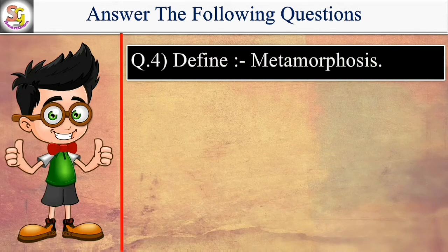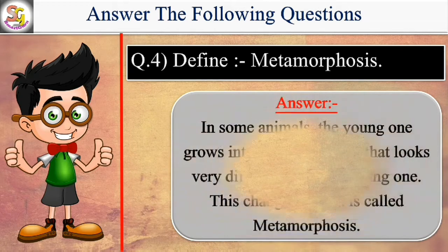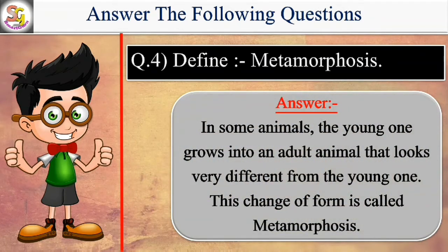Define metamorphosis. Answer: In some animals, the young one grows into an adult animal that looks very different from the young one. This change of form is called metamorphosis.